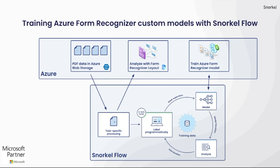At this point, Form Recognizer won't be able to identify specific entities of interest, such as identifying that a specific dollar amount represents the current contract value. But we'll use the information provided by running the Form Recognizer layout model to programmatically label a training dataset of hundreds or thousands of documents, and then train our custom Form Recognizer model. That custom model will then be able to identify the specific entities of interest in new unseen documents.